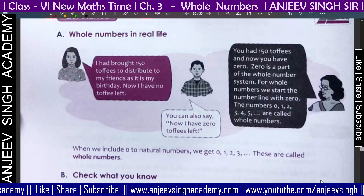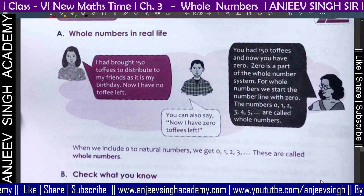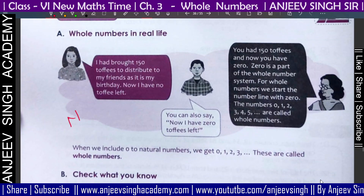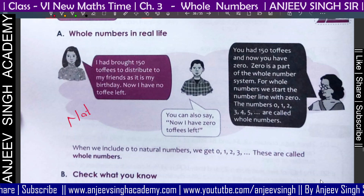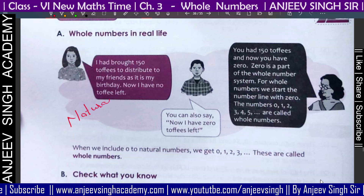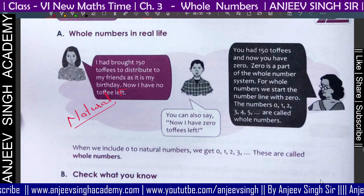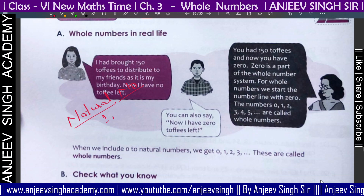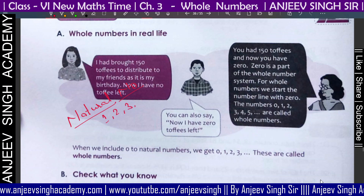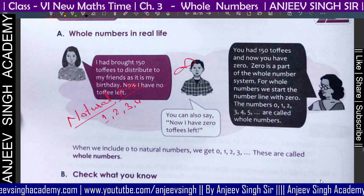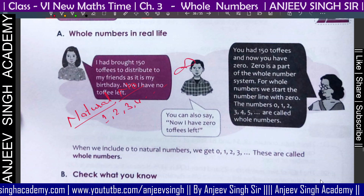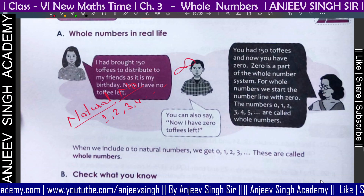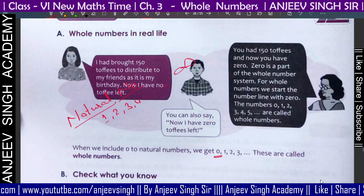First we will understand the whole numbers. As you know the natural numbers — when you talk about natural numbers it means you talk about counting numbers: 1, 2, 3, 4 — and this will be infinite.